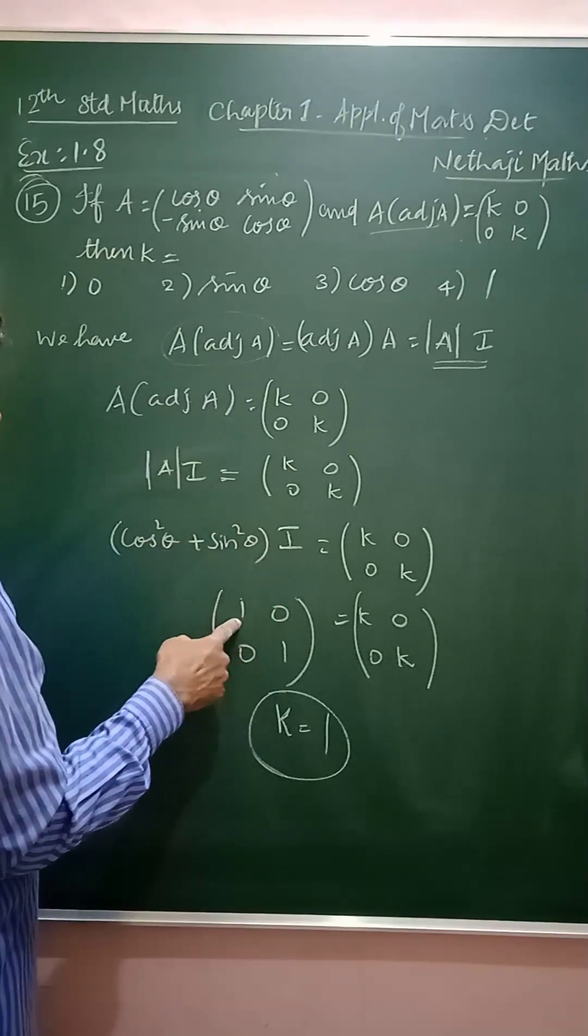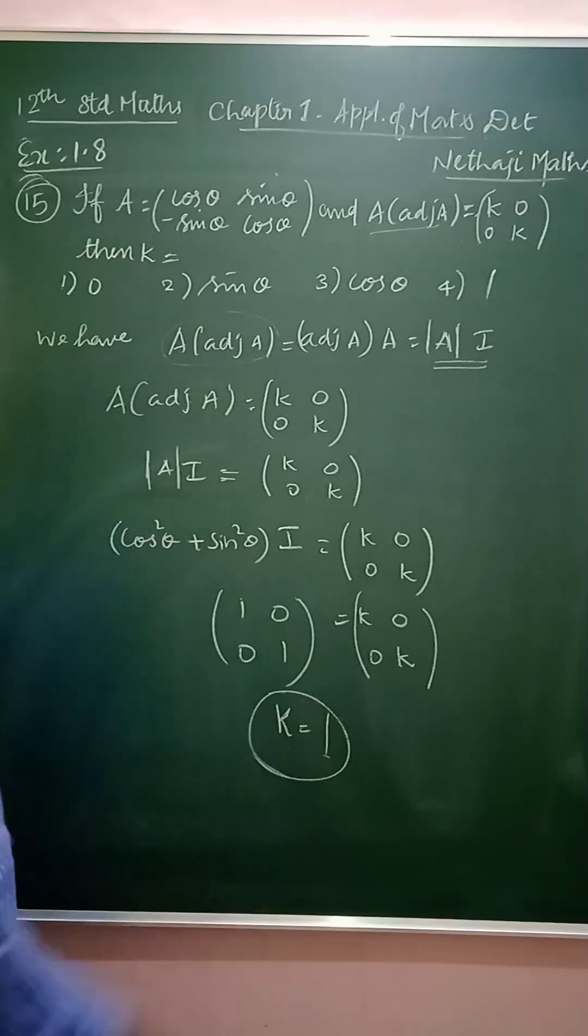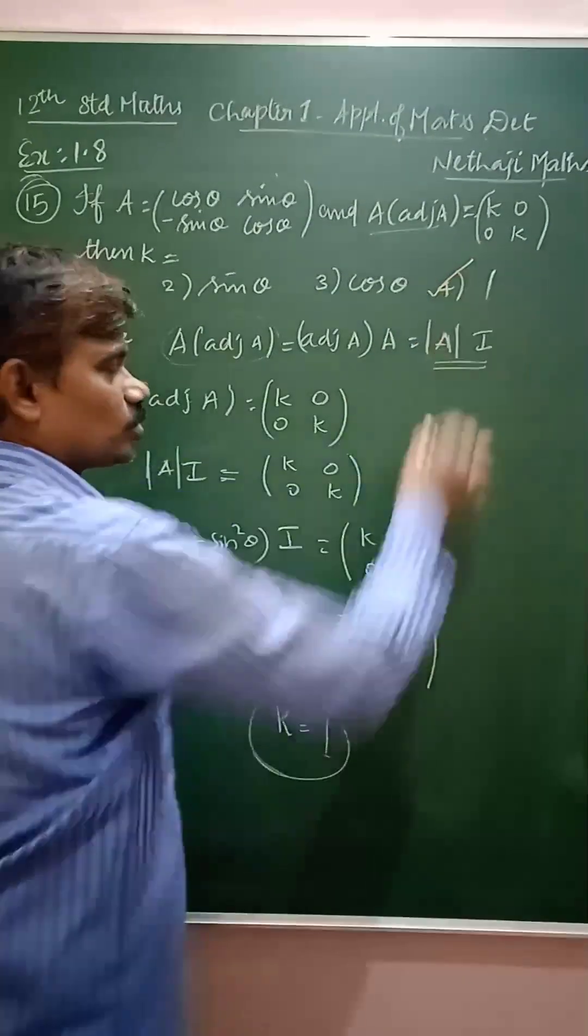So, this is the I. I is the identity matrix, 1, 0, 0, 1. Then you equate this, you will get the value of k as 1. So, the option is fourth one.